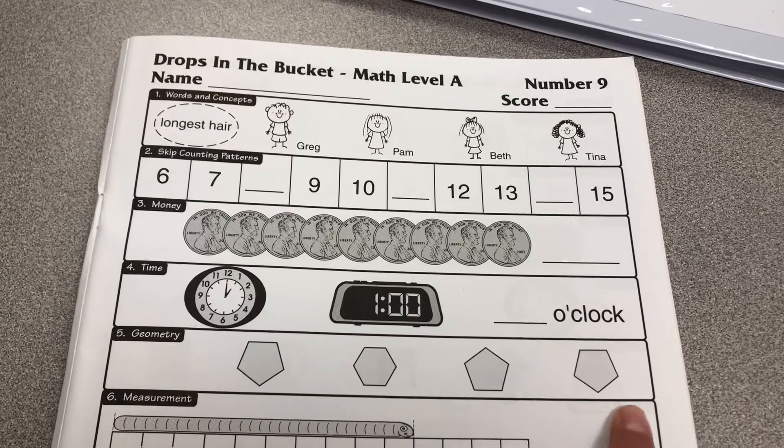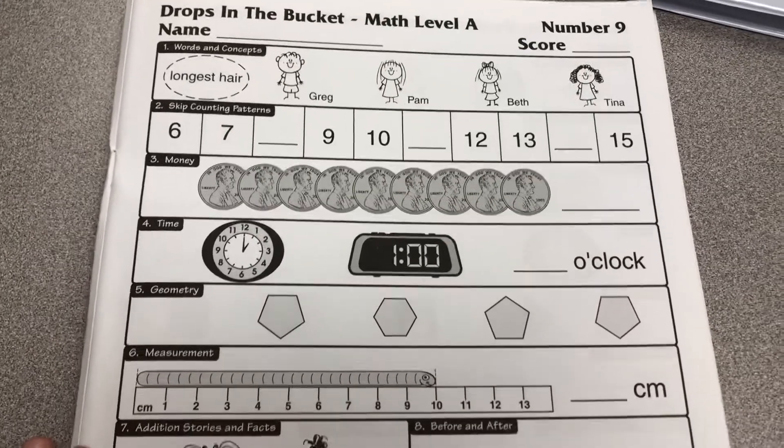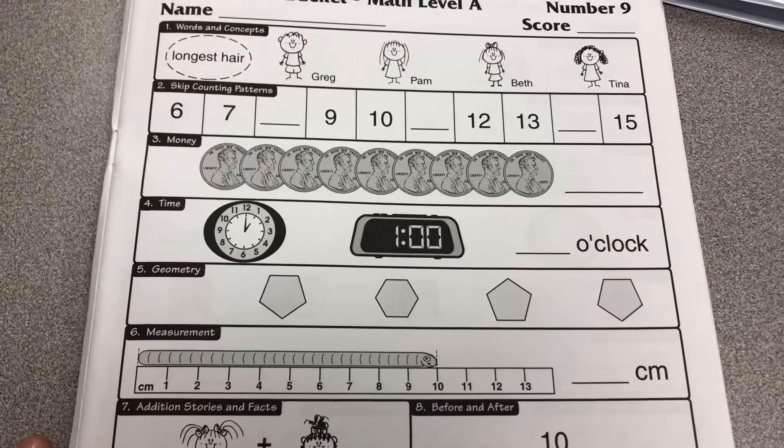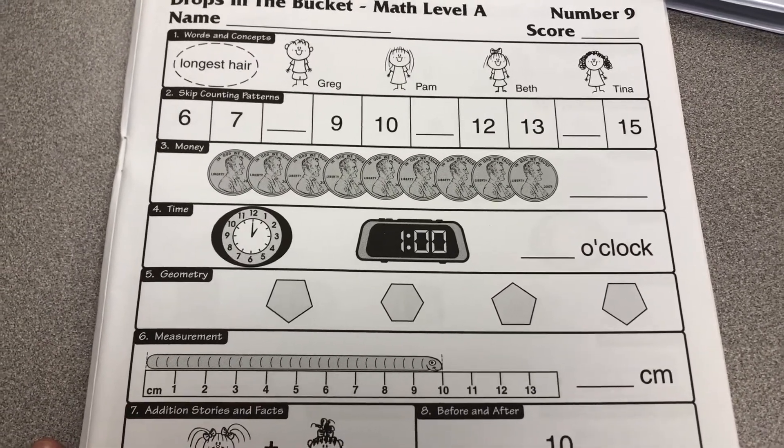Circle the shape that is different. If you are having trouble, count the number of sides each shape has or the number of corners to determine which one is different from the others.